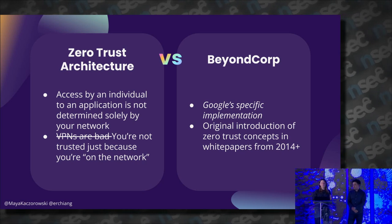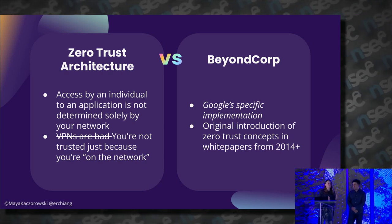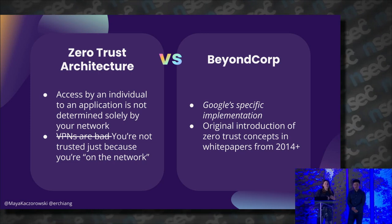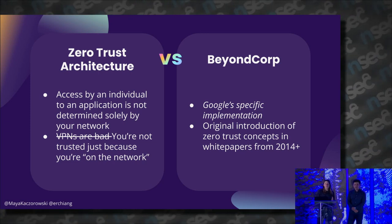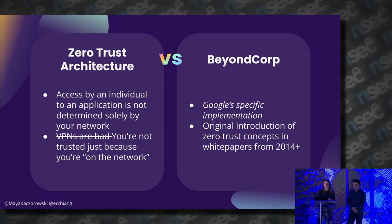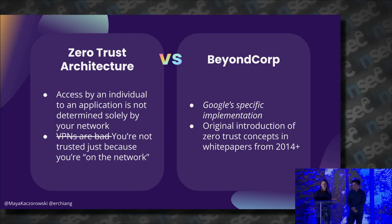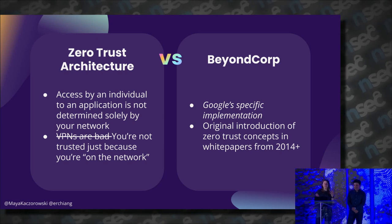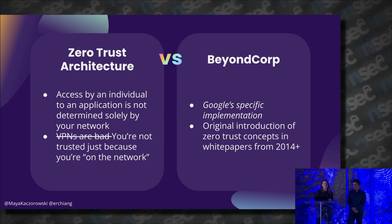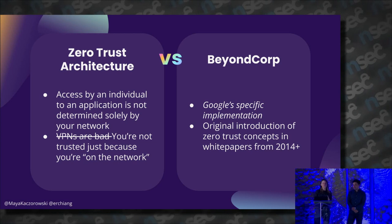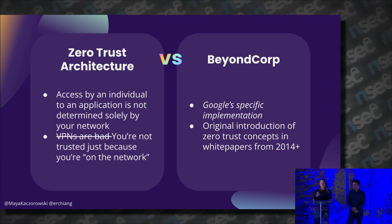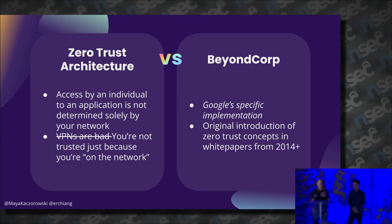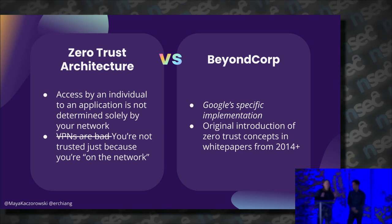With a zero trust architecture, there's no longer such a thing as a privileged physical corporate network. One thing zero trust doesn't mean — and people get confused about this — is that VPNs are bad. I have to say that despite the fact that I work at a VPN company. There's nothing inherently wrong with VPN, but there is something wrong with assuming that because someone's on the VPN or on the corporate network, they're trusted.